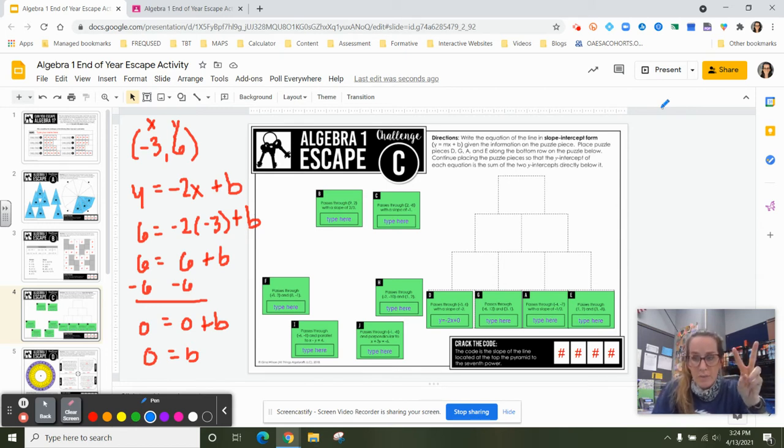now for G, it's giving me 2 points. So it's passing through the point negative 6, 13. And the other point is 3, 1. All right. So I have to find the slope between those 2 points.